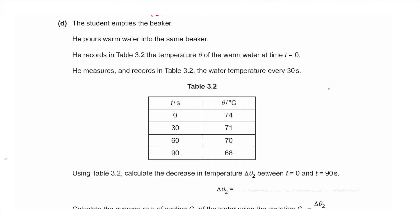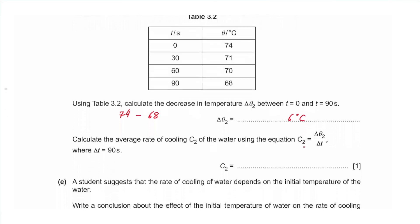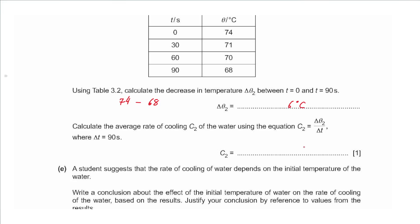Part D: the student empties the beaker and pours warm water in. Using table 3.2, calculate delta-theta-2 between time 0 and time 90: 74 minus 68 gives 6 degrees Celsius. Calculate C2 = delta-theta-2 / delta-t = 6 / 90, giving approximately 0.067 degrees Celsius per second.